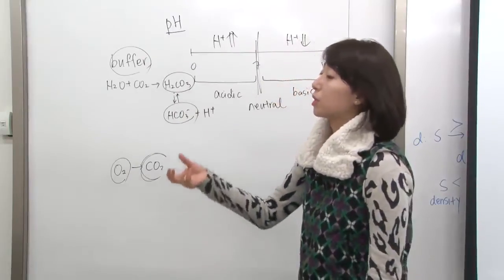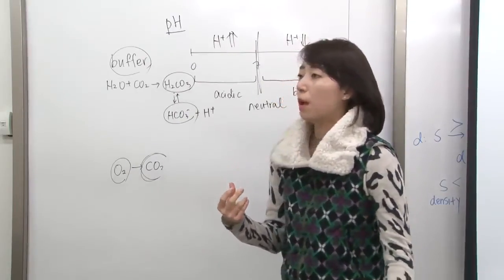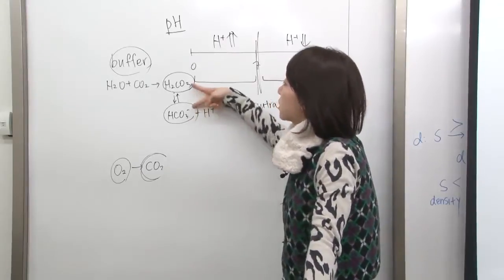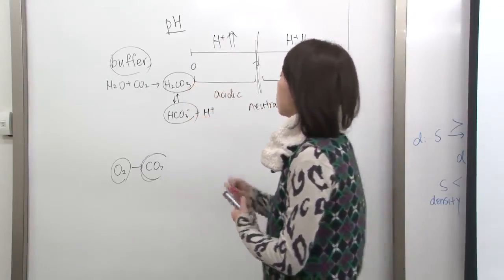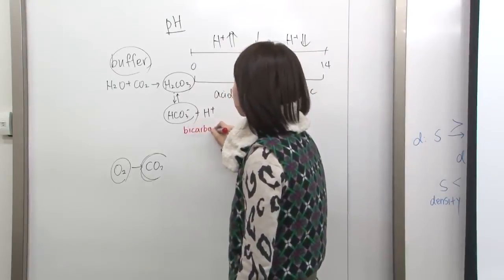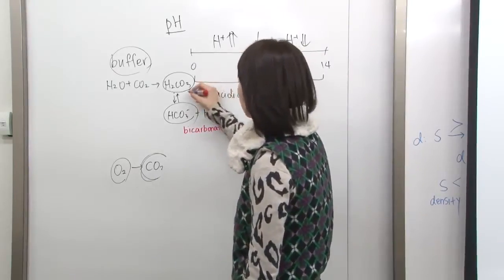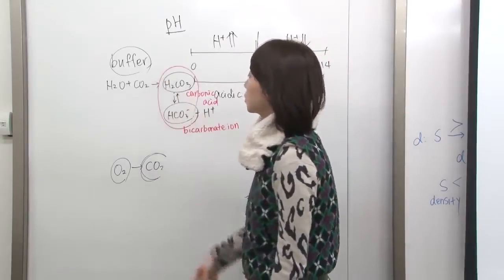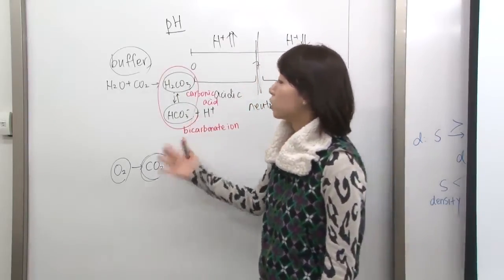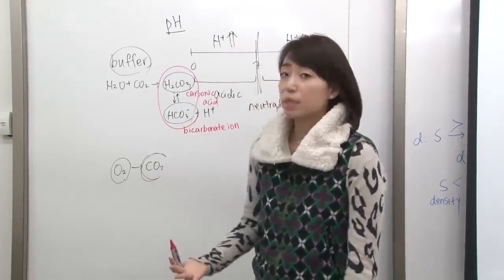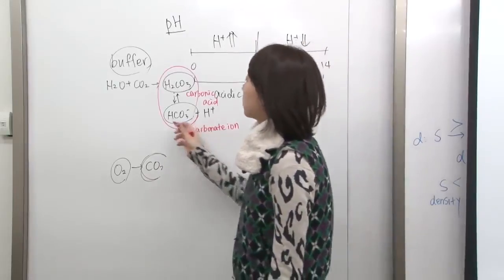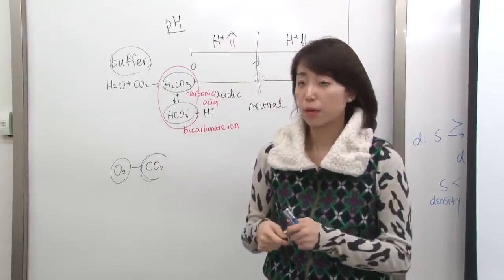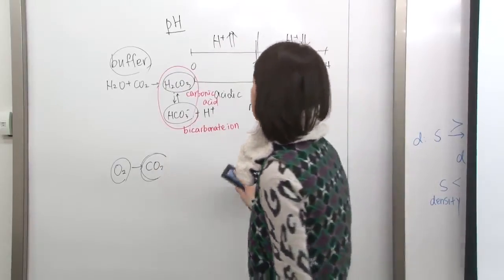If we take in something really acidic or swallow some base, we'll still be okay in small amounts because this buffer system exists. HCO₃⁻ is called the bicarbonate ion and H₂CO₃ is carbonic acid. For the SAT, you just need to know these two create the buffer system, keeping our body at a consistent pH of around 7.4, making us resistant to external chemical stress.